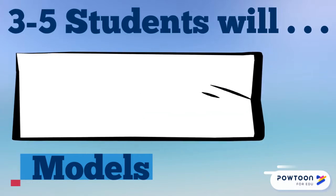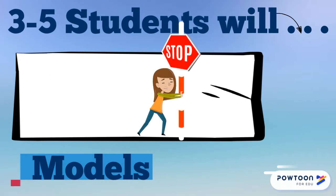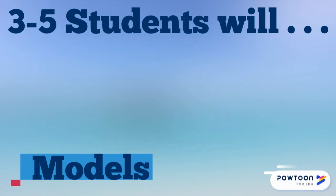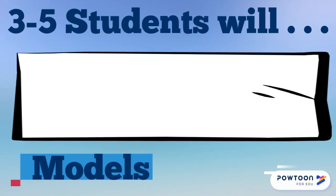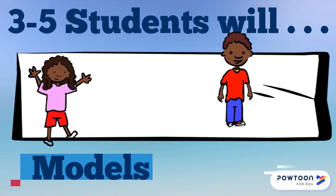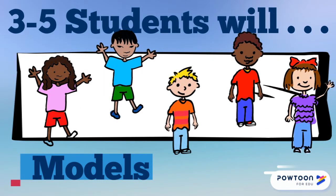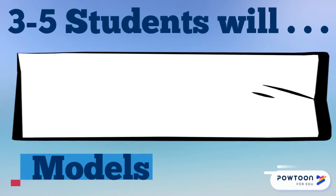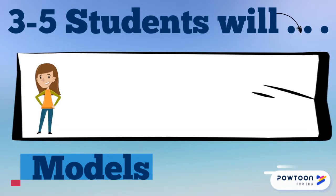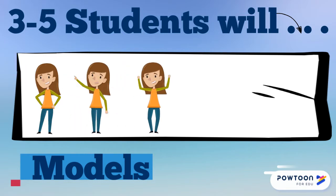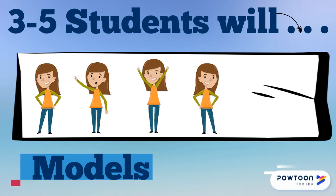In grades three through five, students will be able to identify limitations of models. They'll be able to work together to develop and revise a model based on evidence that shows the relationships among the variables for frequent and regularly occurring events. They'll be able to develop a model using an analogy, example, or abstract representation to describe a scientific principle or design solution. They'll also be able to develop and use models to describe and predict phenomena.